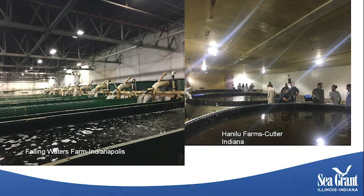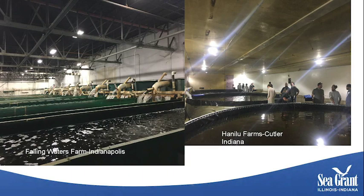Falling Waters Farm in Indianapolis operates a decoupled aquaponics system using large rectangular fiberglass tanks of about 100,000 gallons each to raise tilapia — approximately one million gallons of water total in an indoor RAS system. Hanaloo Farms in Cutler, Indiana utilizes an old hog confinement building converted to RAS production, raising barramundi (Australian sea bass) in tanks of about 25,000 gallons each, with about 75,000 gallons total.